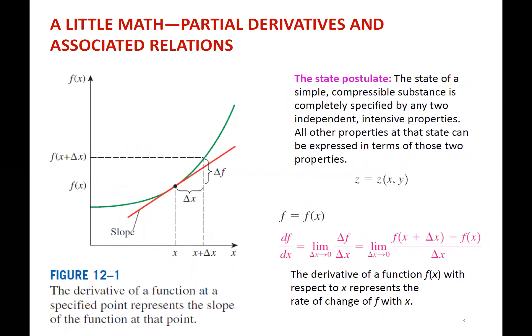Starting with the state postulate, defined back in Chapters 1 and 2: any two independent intensive properties fix our state. Mathematically, if we have temperature and specific volume, that gives us internal energy — or any other property. We've used tables for this, but now we're going to look at equations in this chapter for when we don't have tables available.